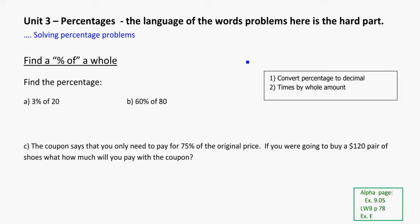In Unit 3, we're looking at percentages again and using them to solve problems. This is where it can get complex because they become word problems and you've got to read them and sort out exactly what they're asking for. That's always the tricky part.